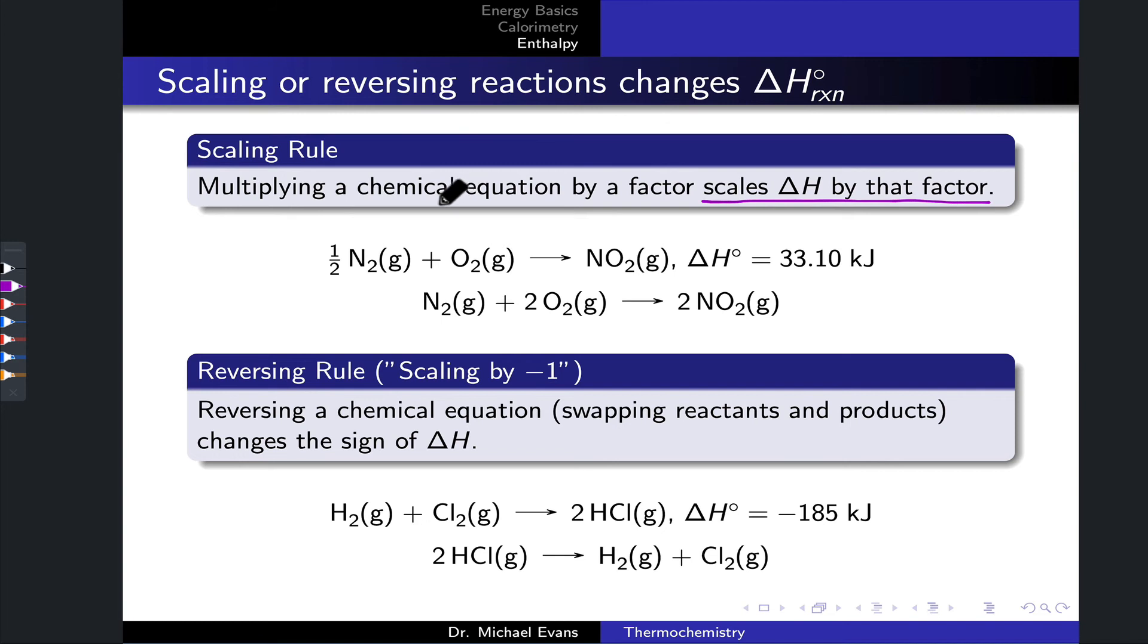Multiplying a chemical equation by a factor, scaling all the coefficients by the same value, scales the delta H by that factor likewise. Here for example, this reaction with one half N2 and one O2 combining has a delta H of positive 33.1 kilojoules. To generate the reaction below here, essentially what we've done is we've taken the entire chemical equation above and multiplied all the coefficients by two, and we're going to do the same thing to the standard enthalpy of reaction to figure out what it is for the reaction in the bottom case. We're going to take this number, multiply it by two; that comes out to 66.20 kilojoules, and we found that simply by doing the same thing to the enthalpy that was done to the chemical equation, multiplying by two. That's the scaling rule in action.